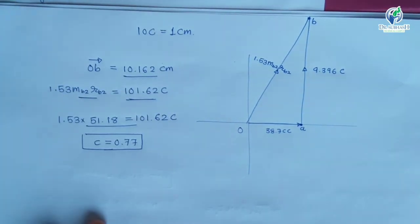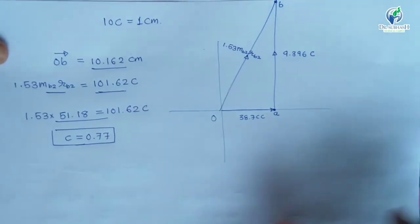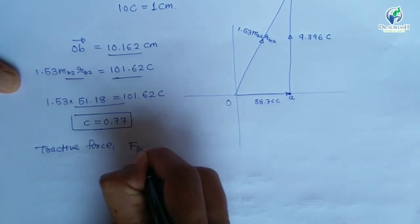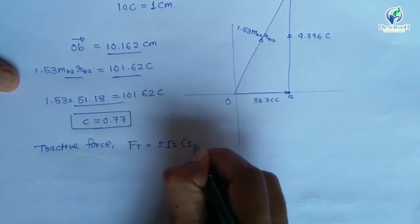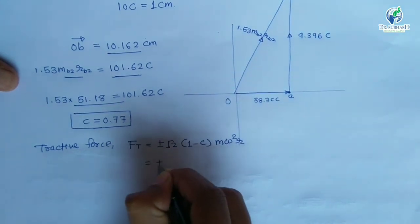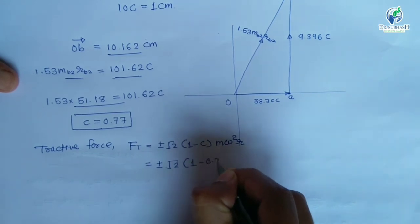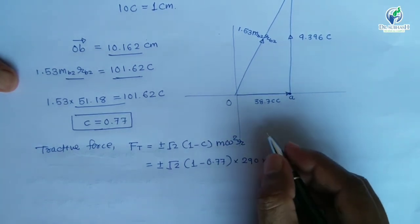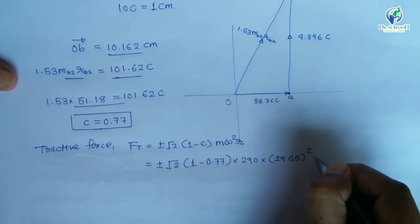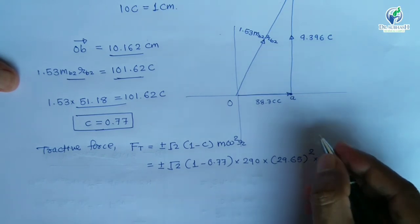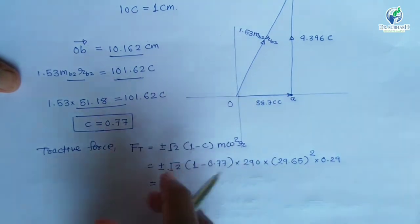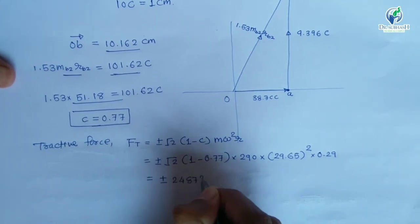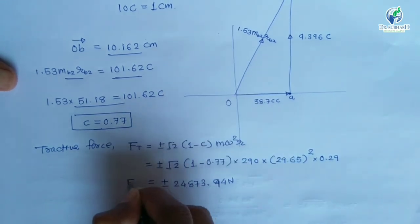Now with C = 0.77 known, we calculate tractive force: Ft = ±√2 × (1 − C) × m × omega² × r. Substituting: ±√2 × (1 − 0.77) × 300 × (29.65)² × 0.29. Simplifying, we get the tractive force Ft = ±24,873.94 Newton. This is our second answer.